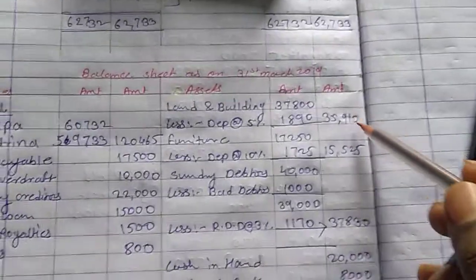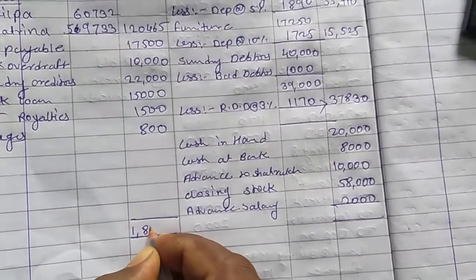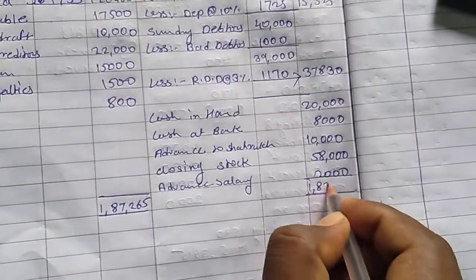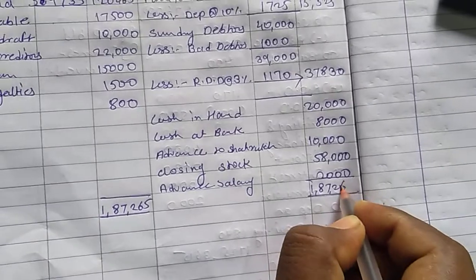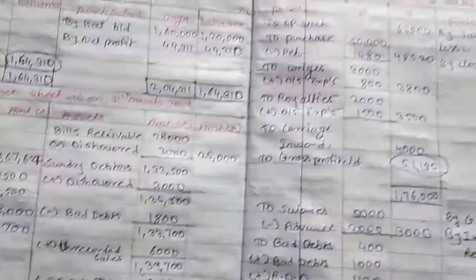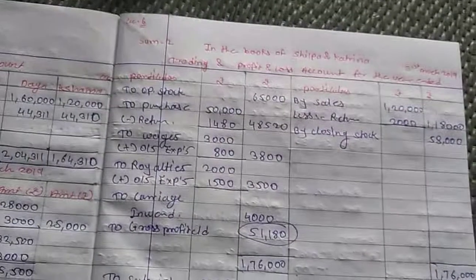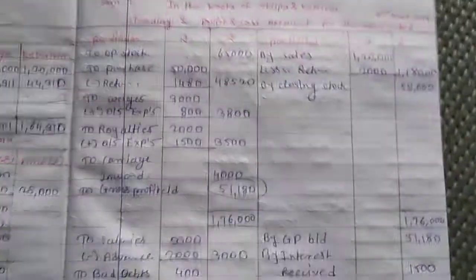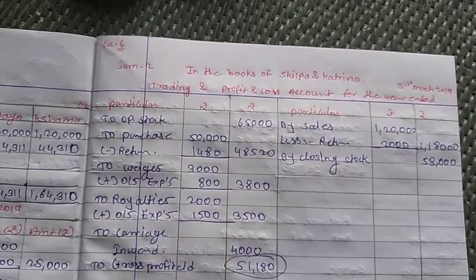Both the total asset and balance sheet sides amount will become Rs. 1,87,265. Guys, if anyone has any doubt about this sum, comment in the comment box. For any new questions, ask them and I will solve all the questions. Please like, share, and subscribe to my YouTube channel. Thank you.